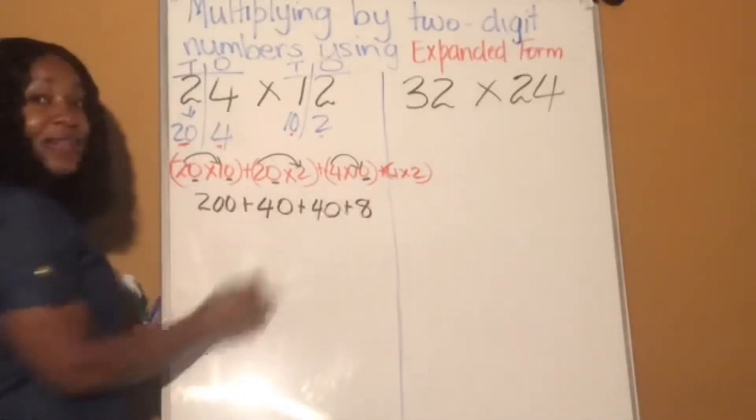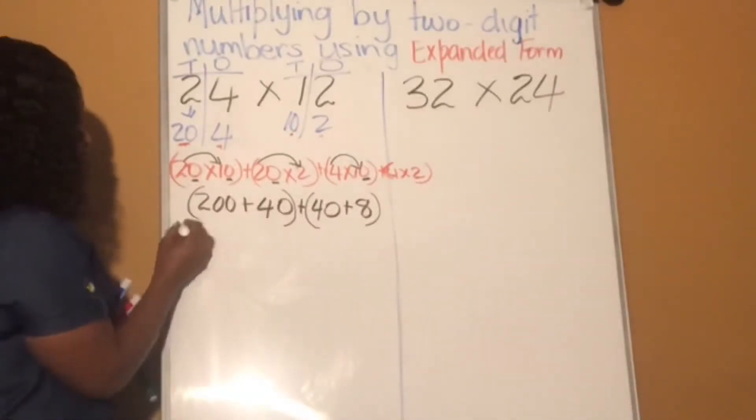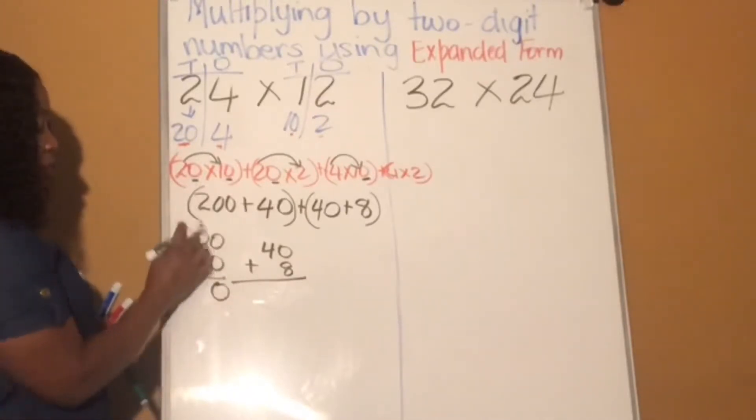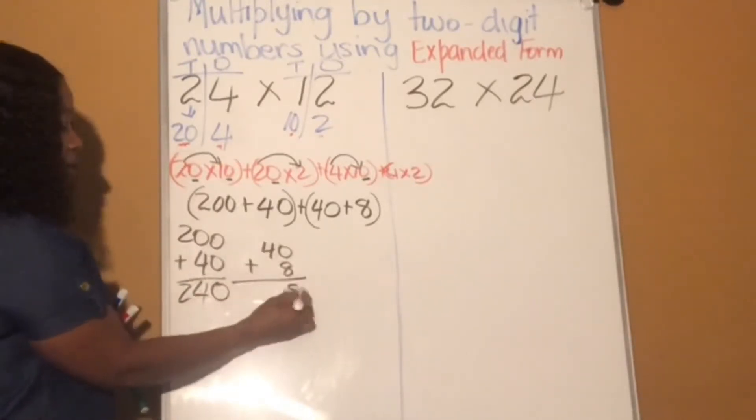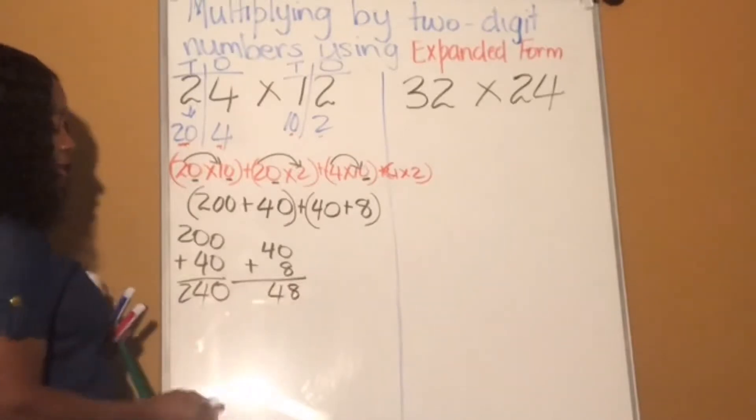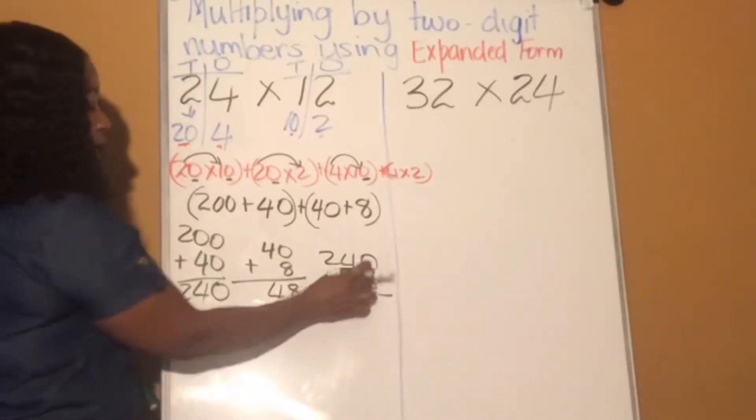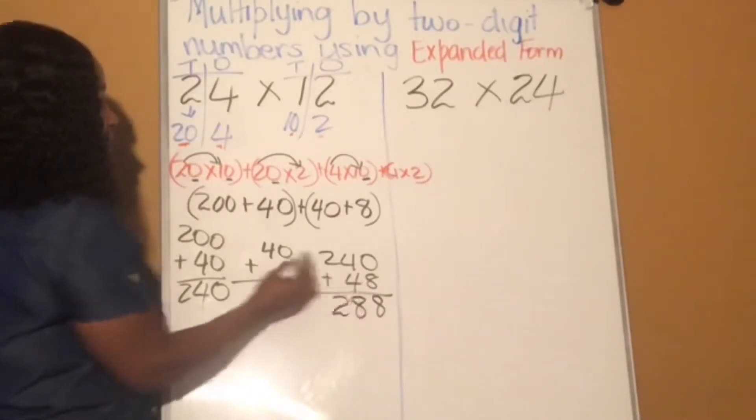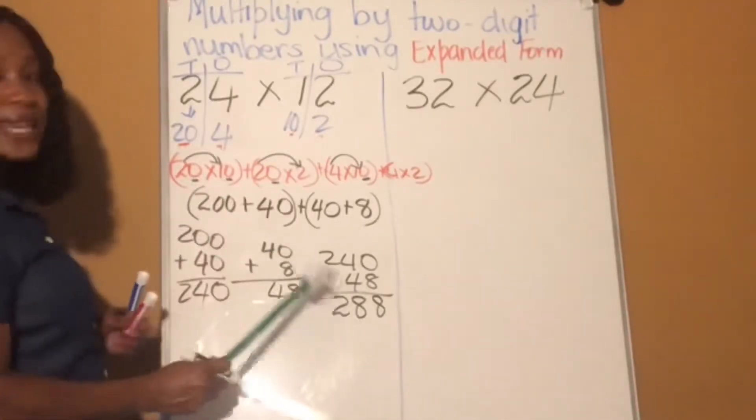Now it's time to add them all up. Remember, I like to do this and add them two by two. So 200 plus 40, and then 40 plus 8. So 0 plus 0 is 0, 4 plus 0 is 4, and 2 plus nothing is 2. Then 8 times 0 is 8, and 4 plus nothing is 4. Then we add the two answers. 240 plus 48. 8 plus 0 is 8, 4 plus 4, that's 8, and 2 plus nothing is 2. So 24 times 12 is 288.